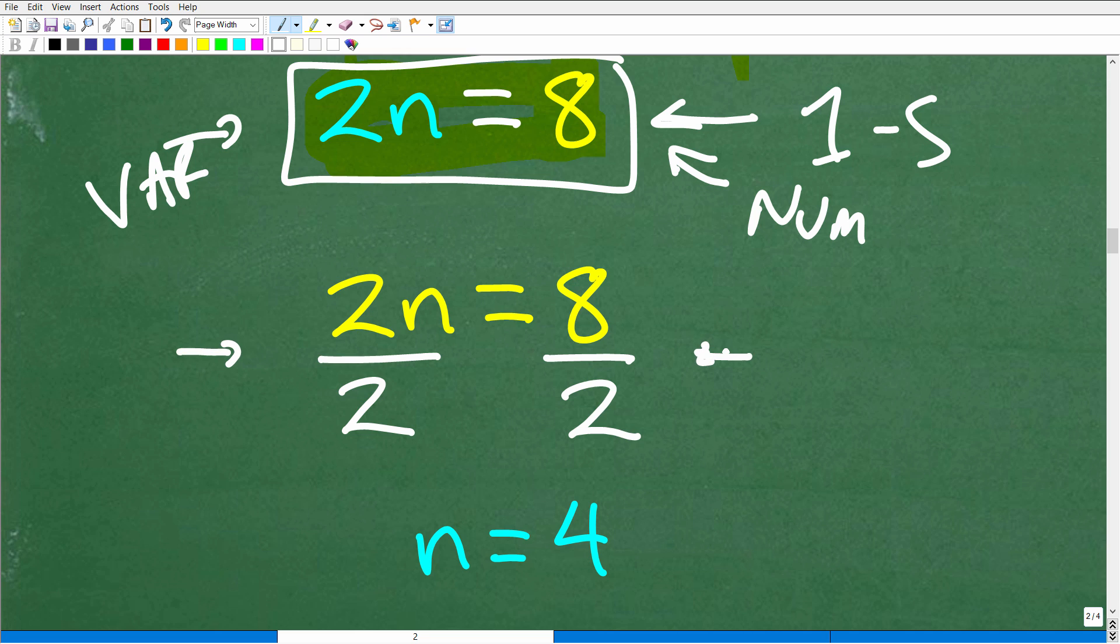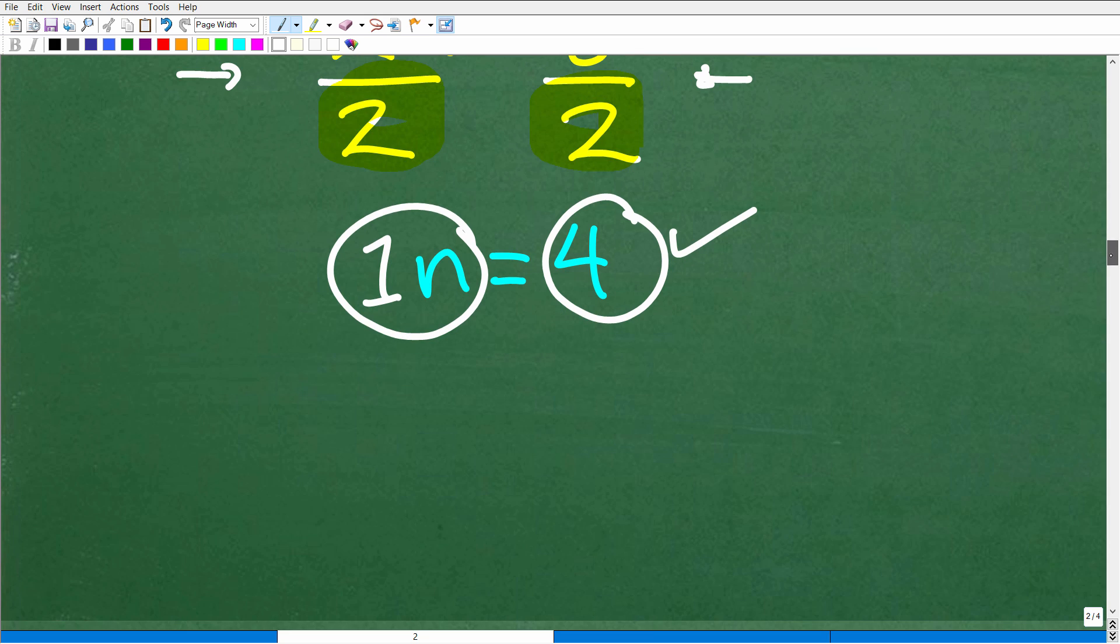So if you're kind of noticing that pattern, you are spot on, right? So here I have 2n. My objective is to just have 1n. So how can I get n by itself? Well, I'm going to divide 2n by 2. Okay? So 2 divided by 2 is 1 or 1n. But again, golden rule of algebra, whatever I do to the left-hand side, I've got to do it to the right-hand side. So 2n divided by 2 is 1n. 8 divided by 2 is 4. And we are done. Okay? So n is equal to 4.